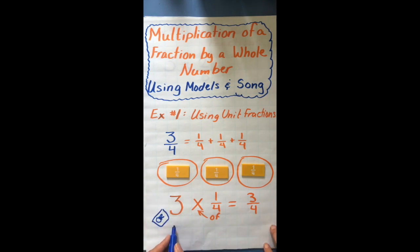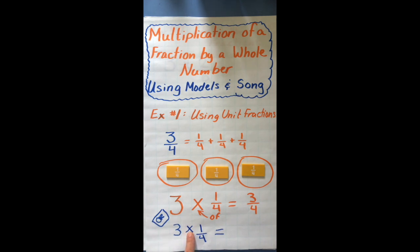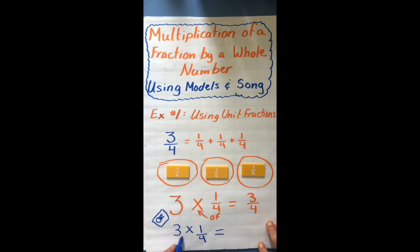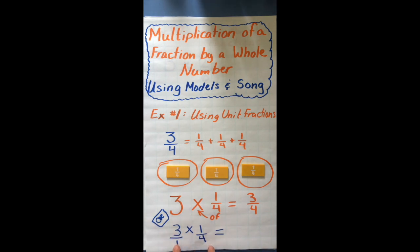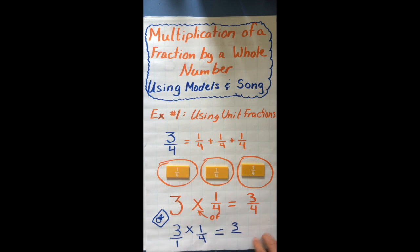Now let's use our song. So I have three times one-fourth. Multiplying fractions is no big problem — it's the top times the top and the bottom times the bottom. But you'll notice three isn't a fraction, so I'm going to turn it into a fraction by putting a one on the bottom, because I have three pieces in three groups, each one piece. Now they're both fractions. Top times the top: three times one is three. Bottom times the bottom: one times four is four. We get three-fourths — same answer.